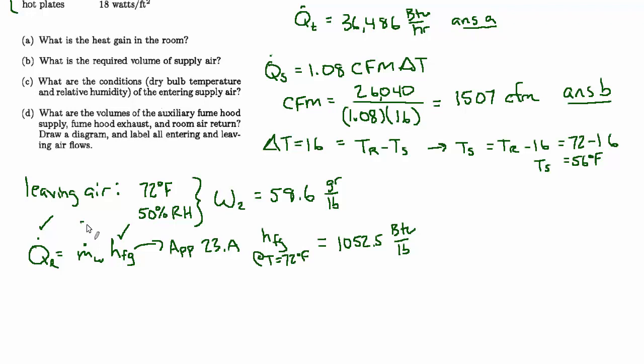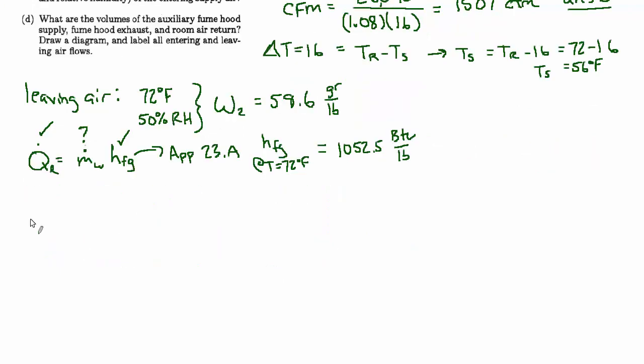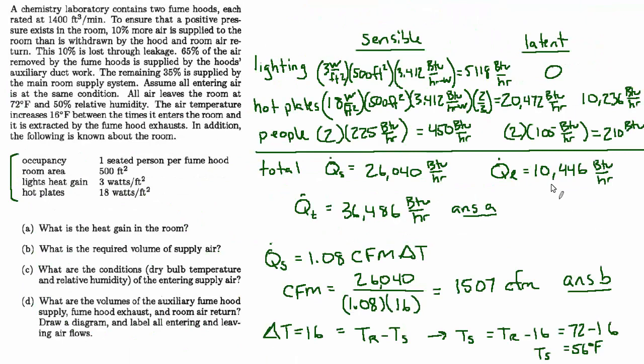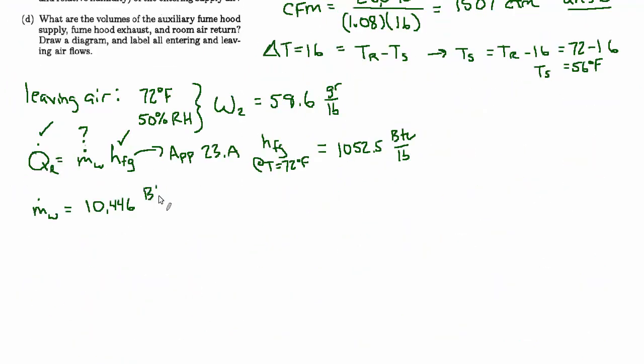So we know HFG at the temperature we care about, and we know the latent load, we can find the mass flow rate of water. That's the water vapor being added to the air by this latent load. So let's solve for m dot w. The latent load we calculated before, we said it was 10,446, and that's BTU per hour, divided by the latent heat of vaporization, 1052.5 BTU per pound. BTU's cancel out, we're going to end up with pounds per hour, and the value is 9.92.